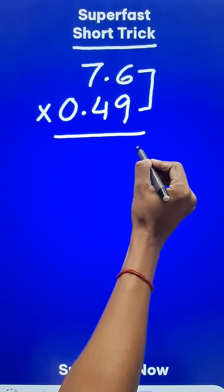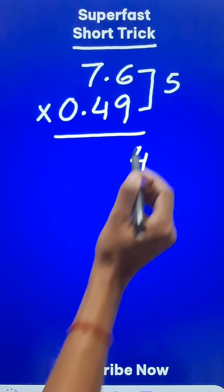6 times 9 is 54. So a 4 and a 5, you have to remember that in the mind.